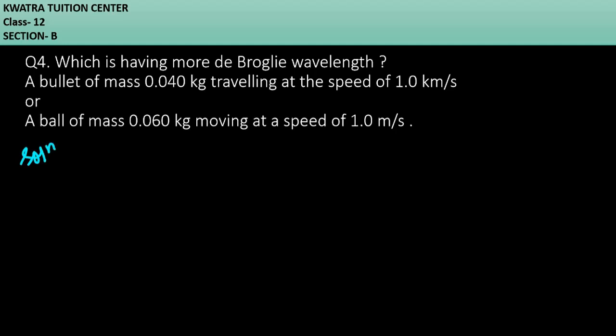So let's start with the fourth question. It says, which is having more de Broglie wavelength? A bullet of mass 0.040 kg traveling at a speed of 1 km per second, or a ball of mass 0.060 kg moving at a speed of 1 meter per second.